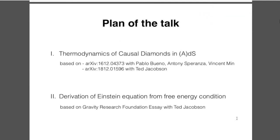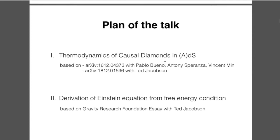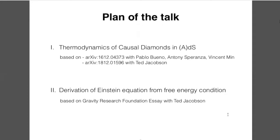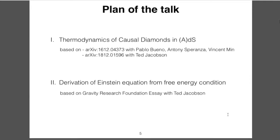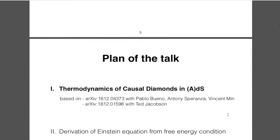The plan of the talk: I will first discuss thermodynamics of causal diamonds in AdS, mainly based on a paper with Ted Jacobson, and also based on earlier work with Pablo Bueno, Anthony Speranza, and Vincent Min. In the second part, I will discuss the derivation of the Einstein equation from a free energy condition, based on a Gravity Research Foundation essay with Jacobson, which will appear tomorrow on the arXiv.